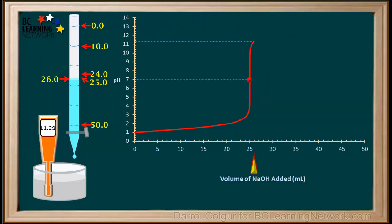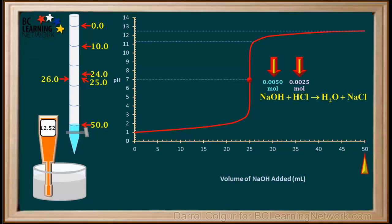Now we'll add NaOH until the volume reaches 50 milliliters. Notice the pH continues to go up, but not as quickly as it did near the equivalence point. The pH after adding 50 milliliters of NaOH to 25 milliliters of HCl is 12.52. At the 50 milliliter mark, we've added 0.005 moles of NaOH to 0.0025 moles of HCl — the base is in sufficient excess to make this solution quite basic, hence the high pH.